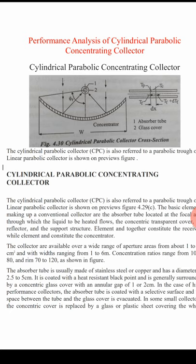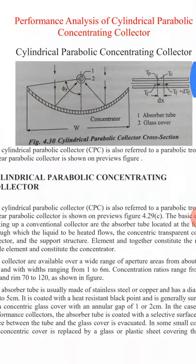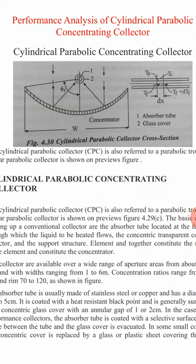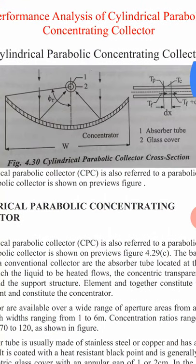Before starting the analysis, we should understand this symbolic representation diagram of the cylindrical parabolic collector cross-sectional view. Here the concentrator has a width W and length L. The solar incident radiation falls over the parabolic concentrating collector and is concentrated at one focal point, where the collector tube is located. Inside the collector tube we have a working fluid - water or any working fluid as per our requirement.